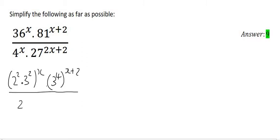4 is the same as 2 to the power of 2, and 27 is the same as 3 to the power of 3. And then in brackets we have 2x plus 2.